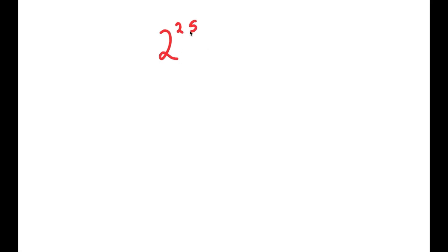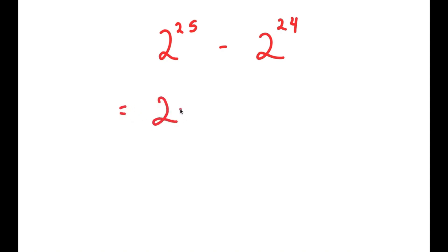In this video I'm going to solve the problem 2 to the power of 25 minus 2 to the power of 24. To solve this, I'm going to first start by rewriting 2 to the power of 25 as 2 to the power of 24 plus 1, so I have this minus 2 to the power of 24.